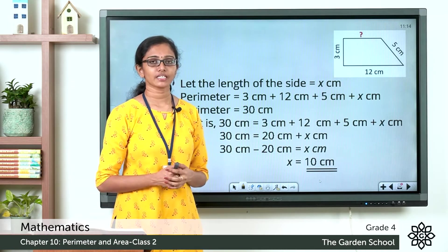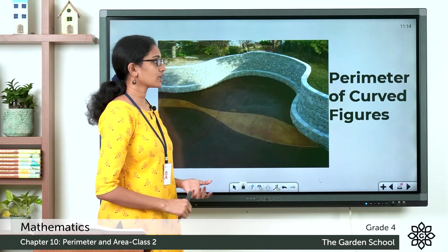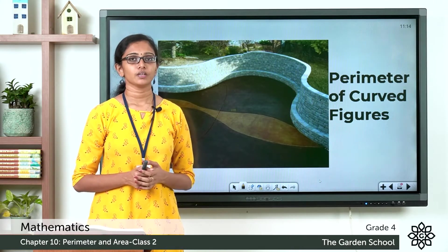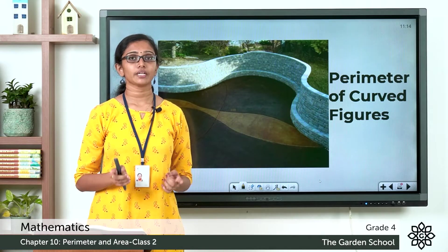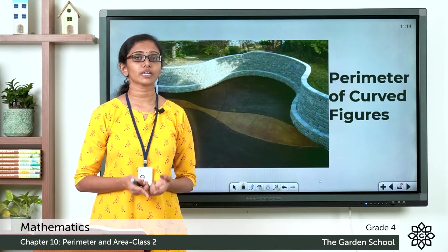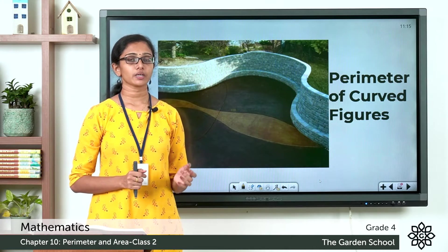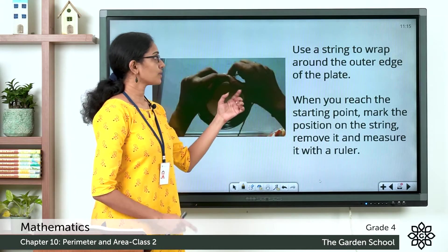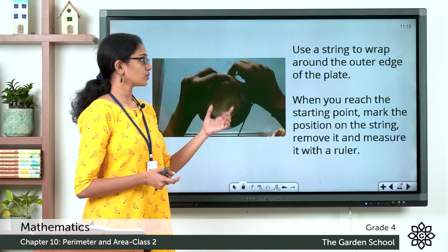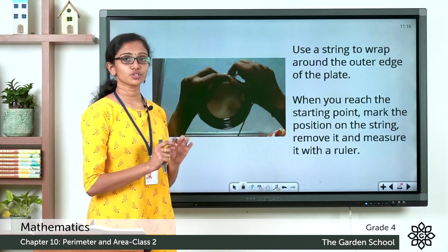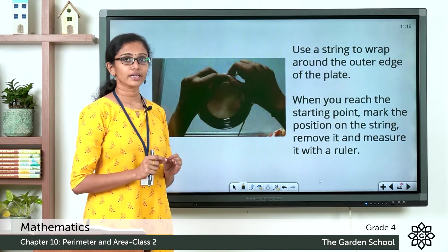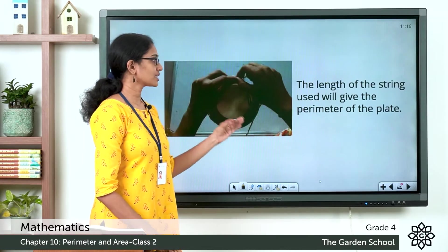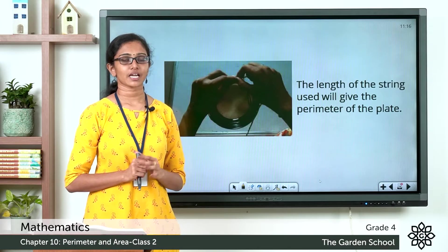Now we will see how to find the perimeter of curved figures. For example, if you are asked to find the perimeter of a plate — which is a curved figure — you find the length of its outer edge. To do this, wrap a string around the outer edge of the plate. When you reach back to the starting point, mark the position on the string. Then remove the string and measure its length using a ruler. The length of the string gives the perimeter of the plate.